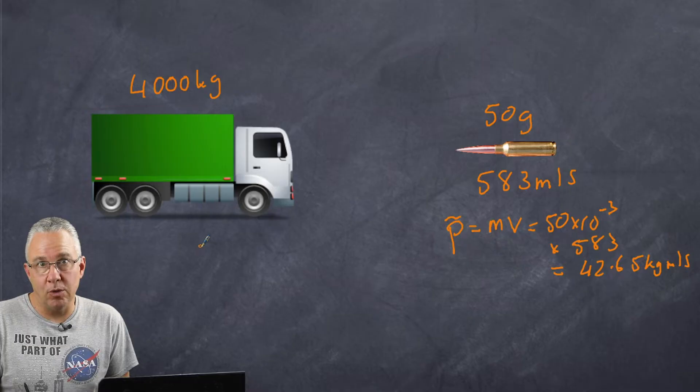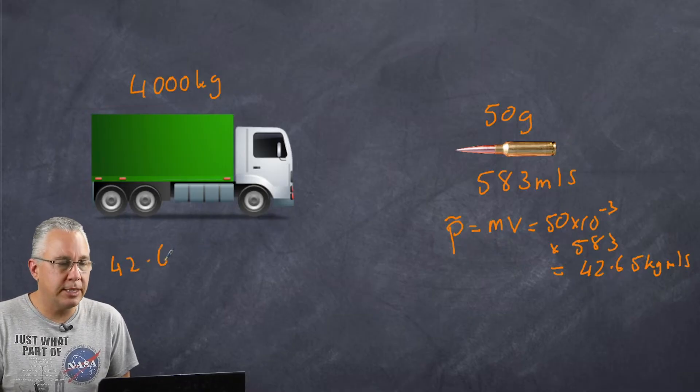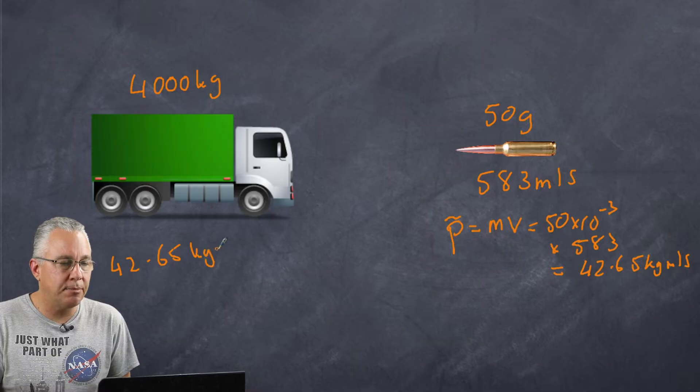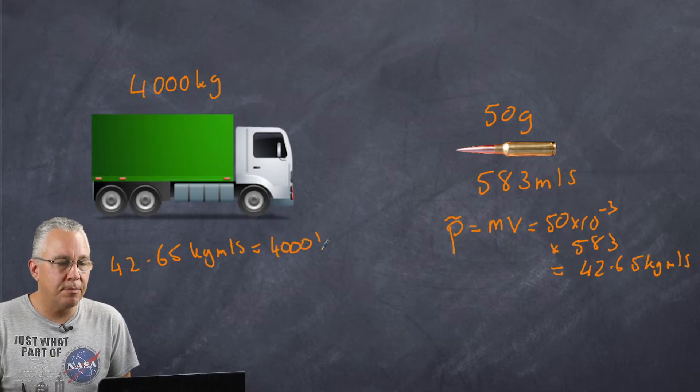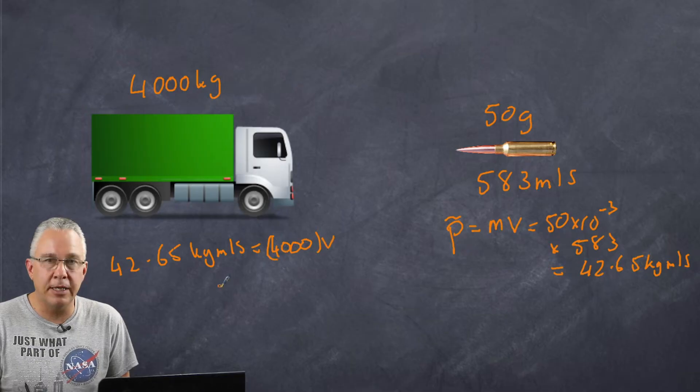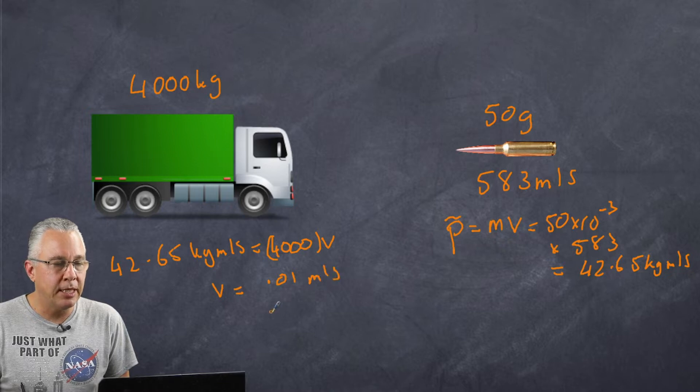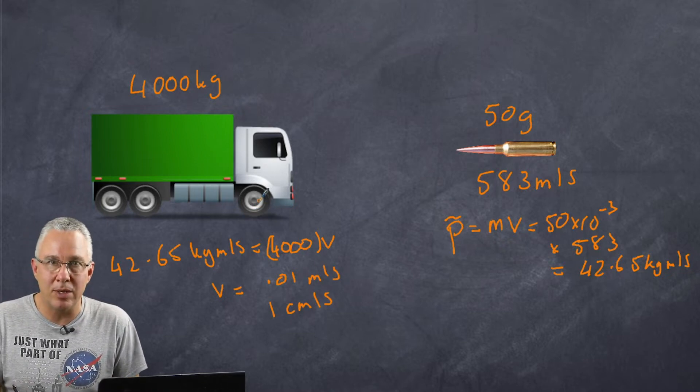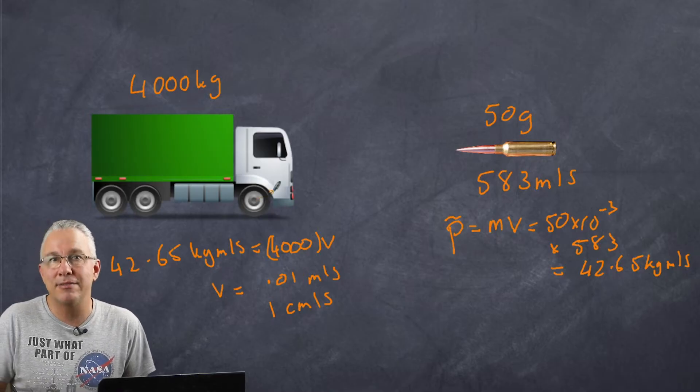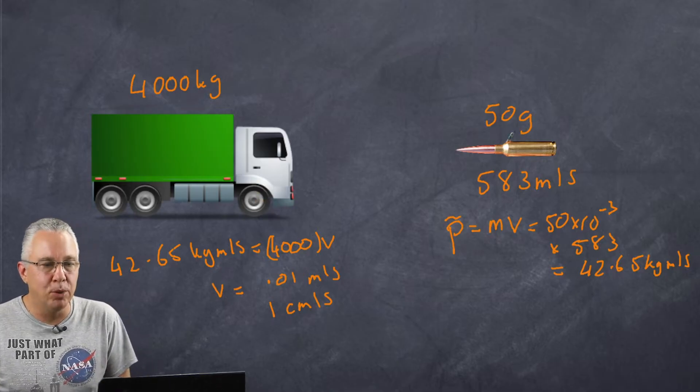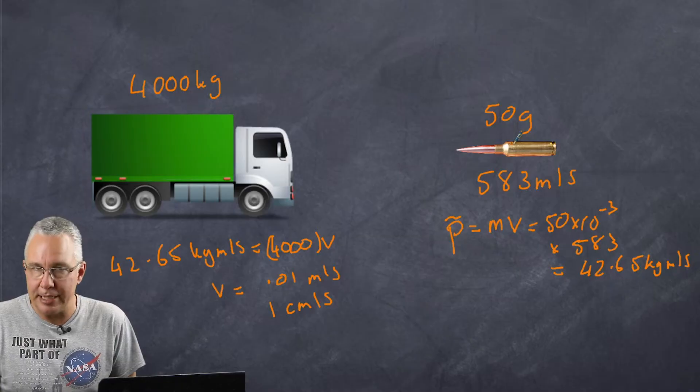So my truck, in order to have the same momentum, will need the same value. So 42.65 kilogram meters per second is equal to my 4000 kilograms multiplied by some value of V. Well that V ends up being 0.01 approximately meters per second, in other words one centimeter per second. So a truck traveling at one centimeter per second is going to have the same momentum as my bullet traveling at 583 meters per second.